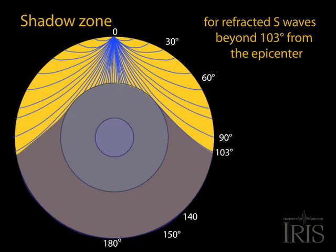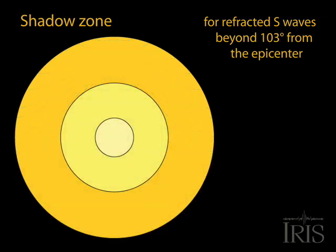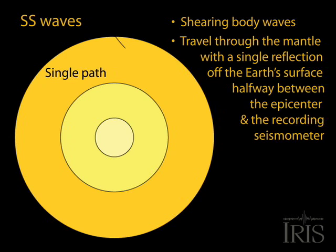The first variation of the S wave is the SS wave that travels through the mantle only, but bounces once off the Earth's surface between the epicenter and the recording seismometer. SS waves can be seen at recording stations any distance from the epicenter.